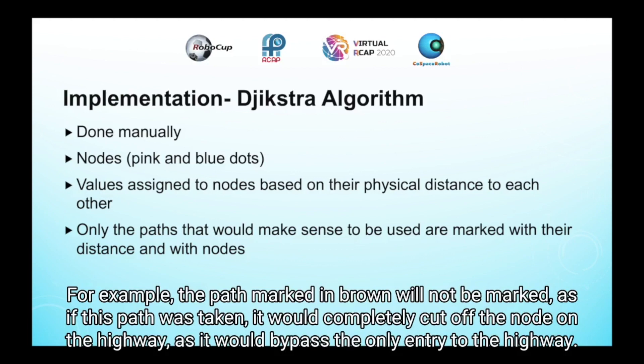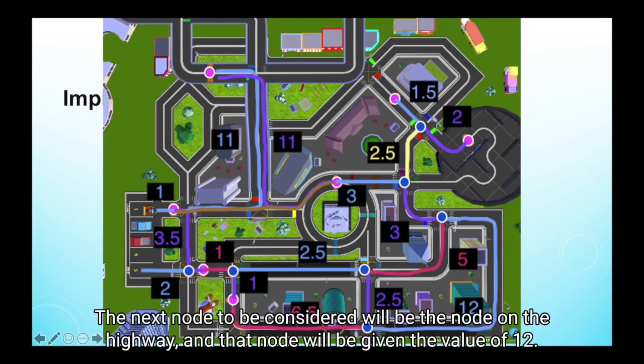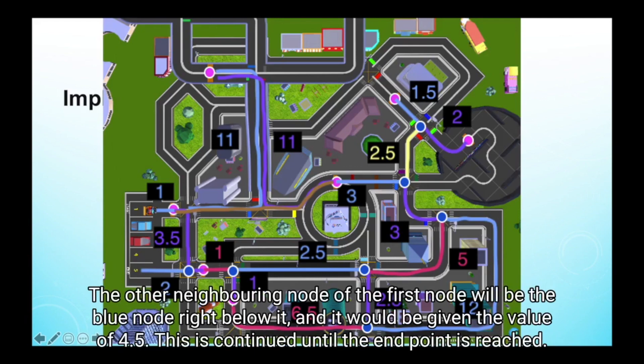For example, the path marked in brown will not be marked, as if this path was taken, it would completely cut off the node on the highway, as it would bypass the only entry to the highway. The first node considered is the waypoint right in front of the start point, and it will only be assigned the value of 1. The next node to be considered will be the node on the highway, and that node will be given the value of 12. The other neighbouring node of the first node will be the blue node right below it, and it will be given the value of 4.5. This is continued until the endpoint is reached.